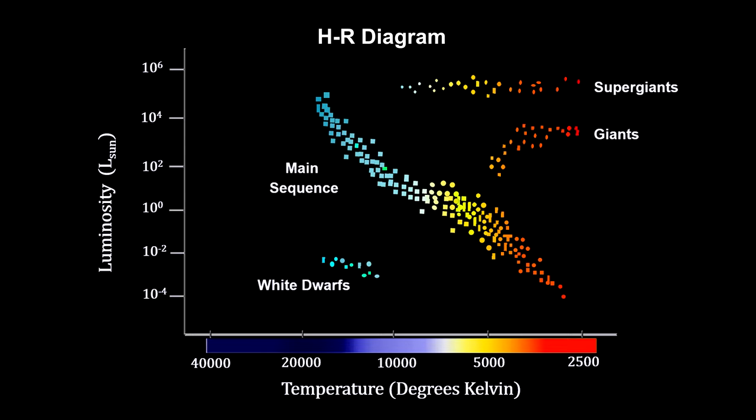Here's the Hertzsprung-Russell, or HR, diagram we covered in the Distant Star segment of the How Far Away Is It video book. The long diagonal line represents the main sequence for stars in hydrostatic equilibrium burning hydrogen.